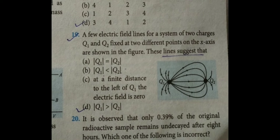Q1 is positive and Q2 is negative. If you look at this, then you will see that the number of lines originating from Q1 is more than the number of lines terminating at Q2. This indicates that Q1 is greater than Q2.